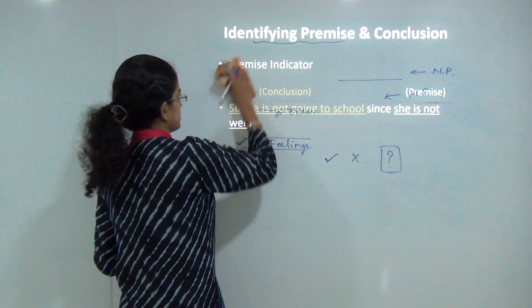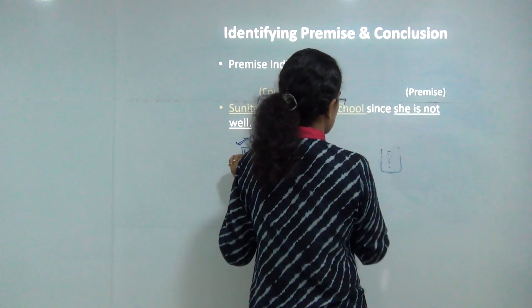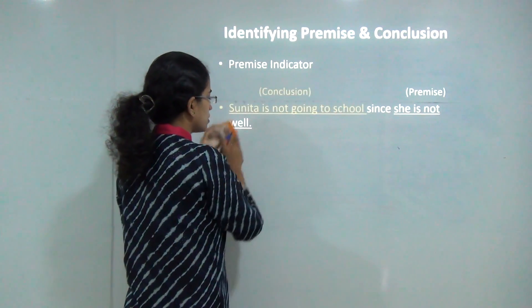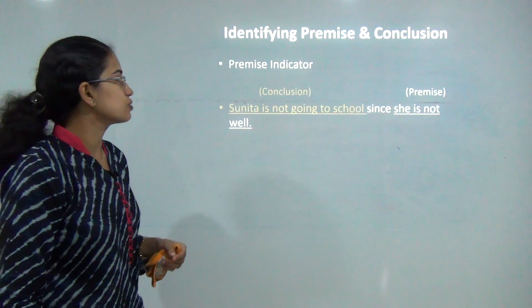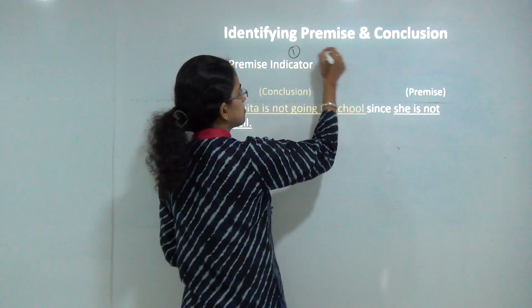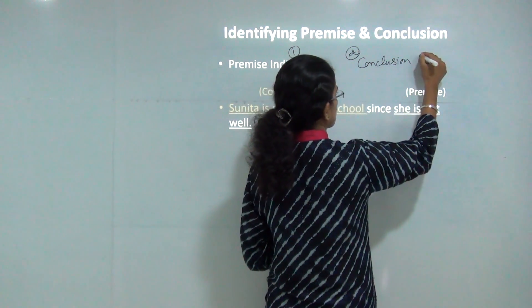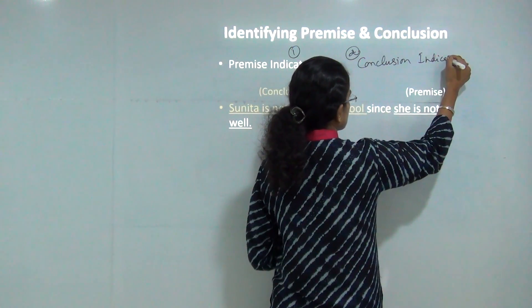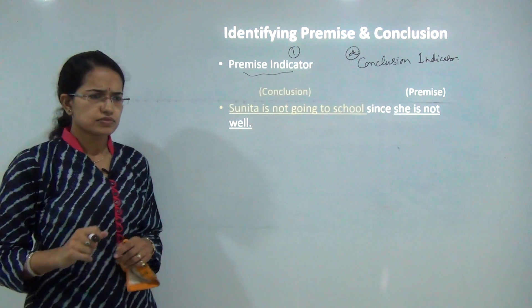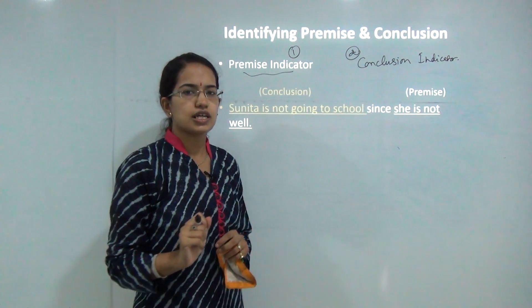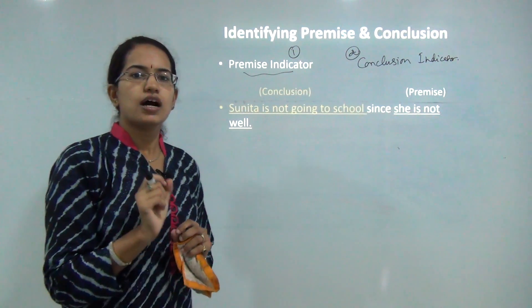When we are identifying premise and conclusion, there are two things that we focus on: first is premise indicators and the next is conclusion indicators. Premise indicators are those indicators that help you identify or locate a premise. For example, if I have a whole lot of passage that is given and I have to identify the premise, I can do that by two means.